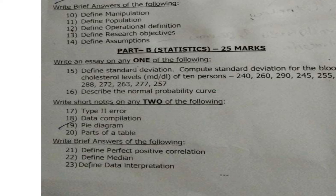For brief answers in Part B, three questions are given, each carrying two marks — three into two equals six marks. The questions are: twenty-first, define perfect positive correlation; twenty-second, define median; twenty-third, define data interpretation. The statistics section totals: essay 9 marks, short notes 10 marks, brief answers 6 marks — equalling 25 marks.